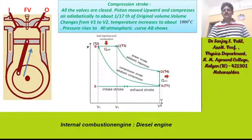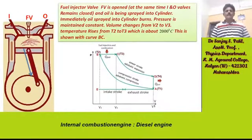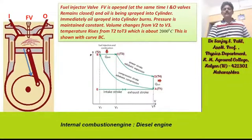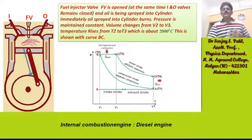Now we will see how the fuel injector valve works. The fuel injector valve FV is now opened. The inlet valve as well as the outlet valve are closed. As soon as oil is spread, it is immediately spread into the cylinder. Pressure is maintained constant and volume changes from V2 to V3, as shown in curve BC.